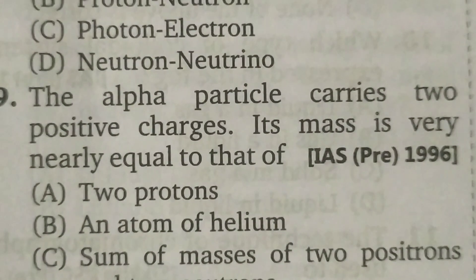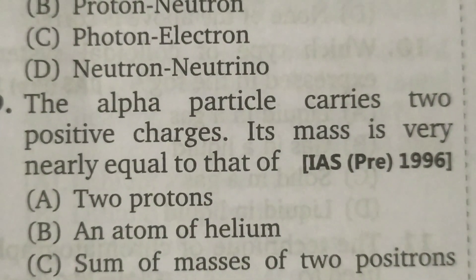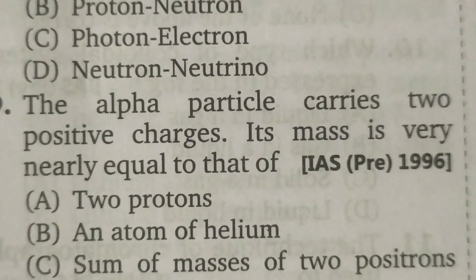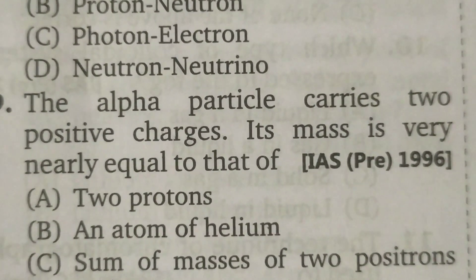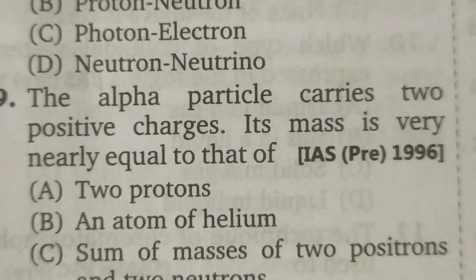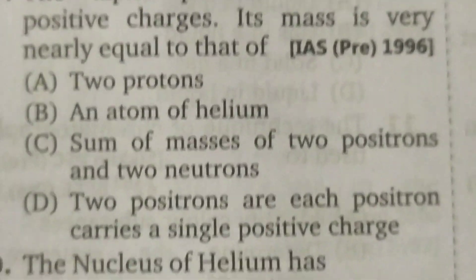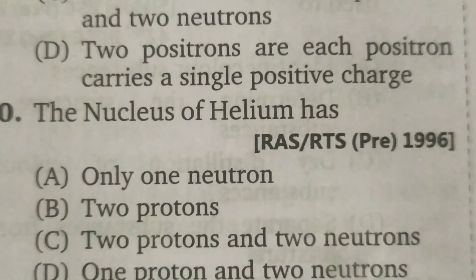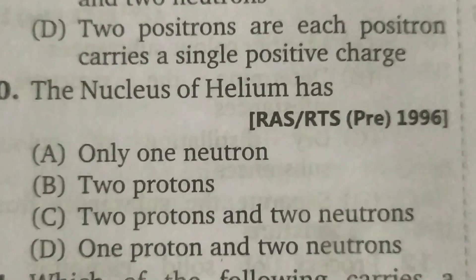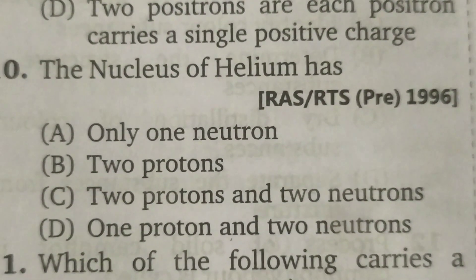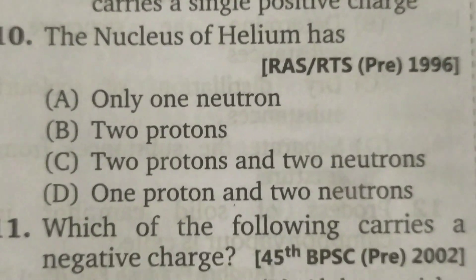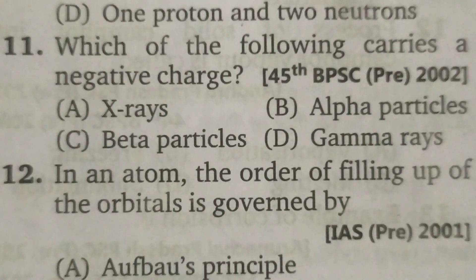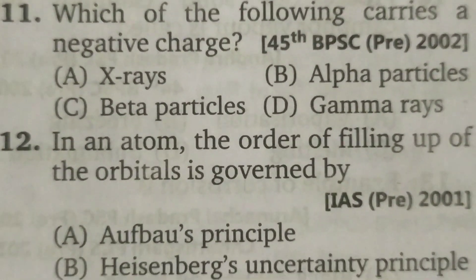The alpha particle carries two positive charges. Its mass is very nearly equal to that of an atom of helium. The nucleus of helium has two protons and two neutrons. Which of the following carries a negative charge? Beta particles.